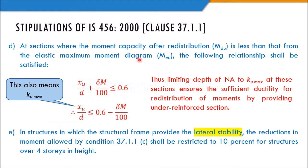The next clause says: at sections where moment capacity after redistribution is less than the elastic moment, the depth of neutral axis XU/D shall satisfy: XU/D ≤ 0.6 − (percentage of redistribution / 100). IS code specifies the maximum permissible redistribution is 30%. The designer may choose 10% or 20% but cannot exceed 30%. This formula ensures that the section is under-reinforced with sufficient ductility for whatever redistribution percentage is adopted.